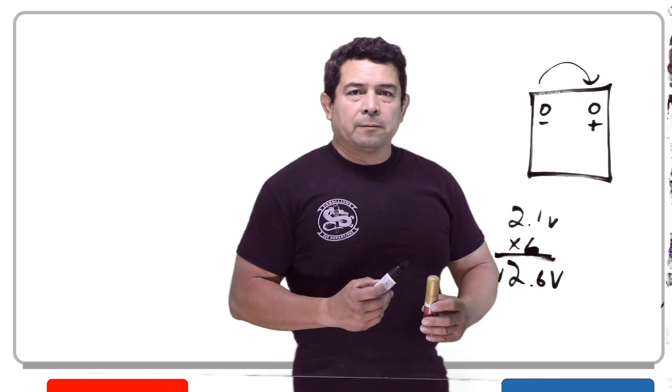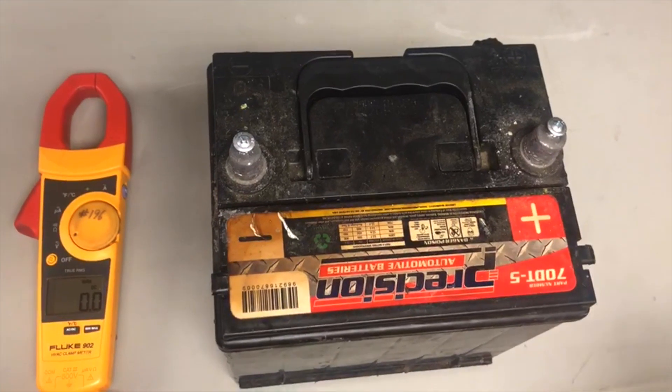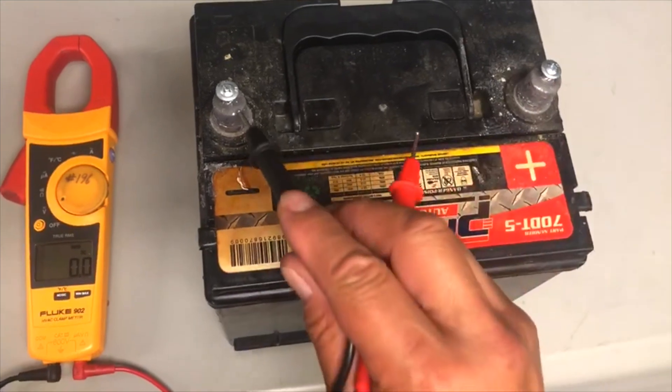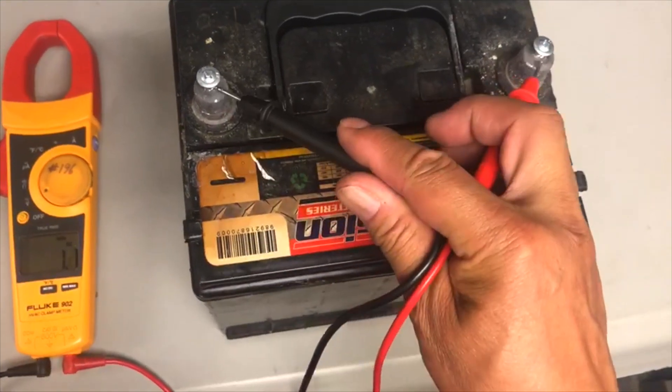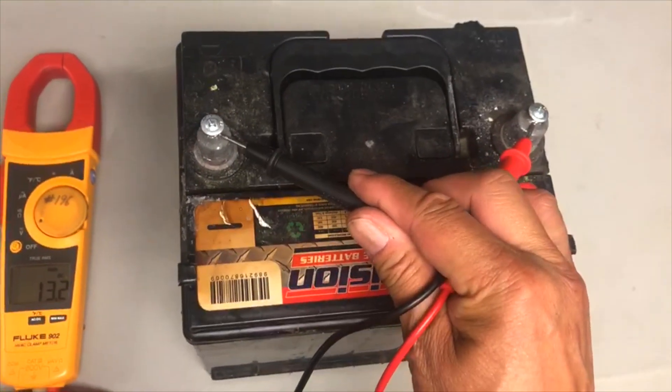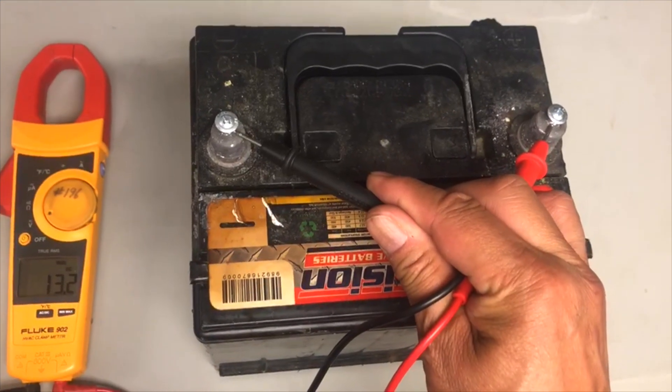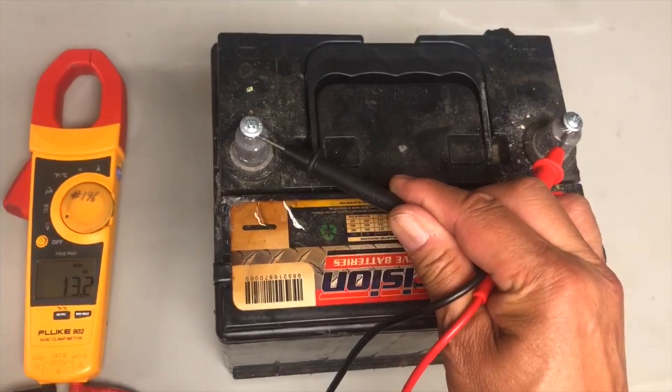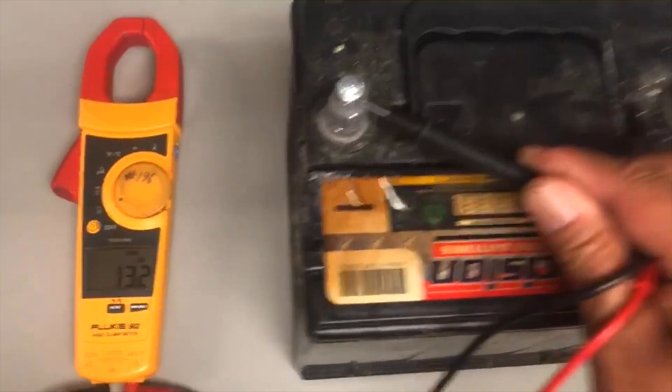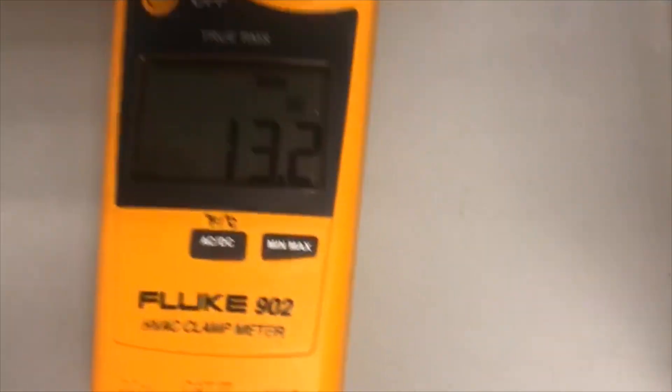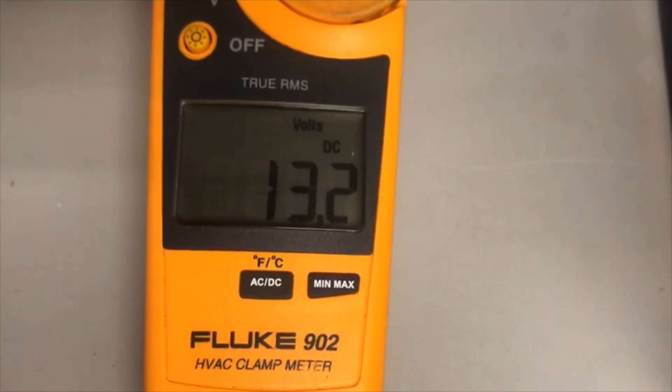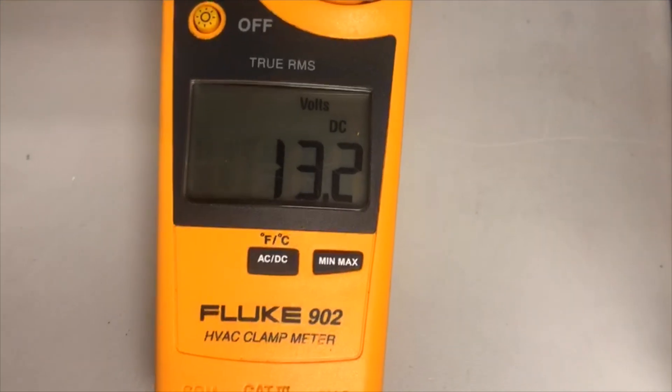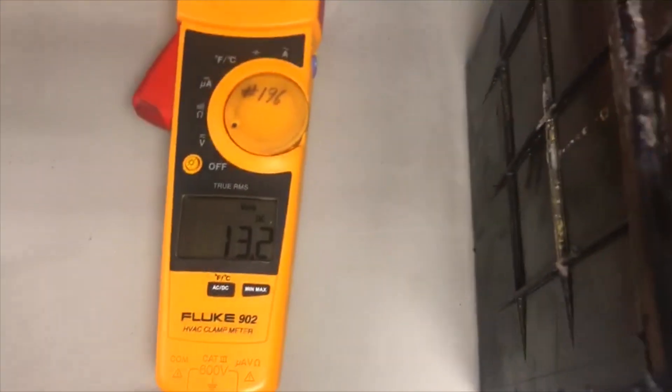When checking a voltage on the battery, we want to make sure that we go across the two terminals like this. If the battery is fully charged, the battery should read 12.6 volts. As we see here, we see that it is reading 13.2 volts.